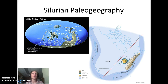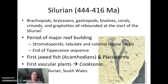Now we get into the Silurian. Laurentia is still here; we have some more land exposed and some highlands from the Taconic orogeny, and we can see the Michigan Basin with its barrier reef. During the Silurian, brachiopods, bryozoans, gastropods, bivalves, corals, crinoids, and graptolites all start to rebound. We go through another period of major reef building, this time focused on stromatoporids and tabulate and colonial rugose corals. This represents the end of the Tippecanoe sequence.